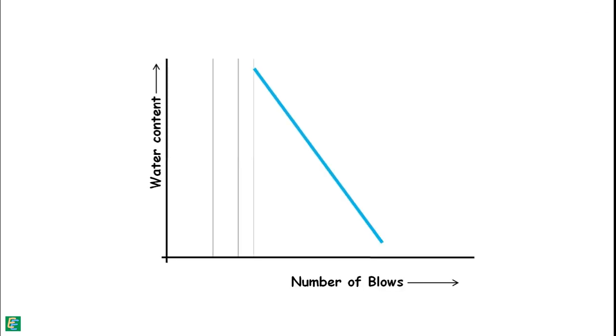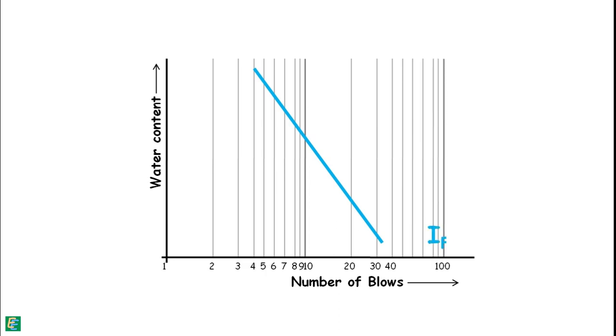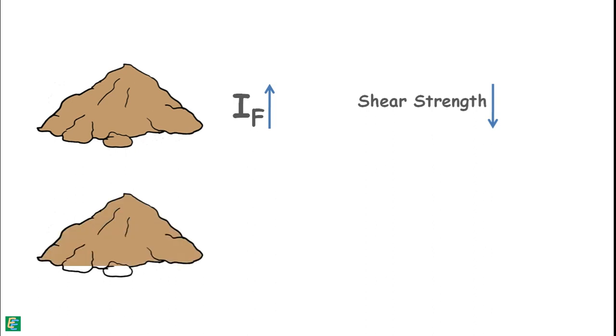Soil with flow curve steeper will have the flow index value higher than that of the soil with the flow curve flatter. A soil with higher value of flow index is said to possess a lower shear strength than that of a soil with a lower value of flow index.